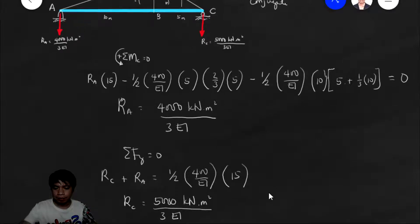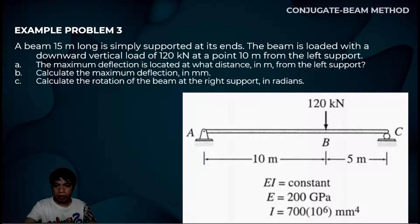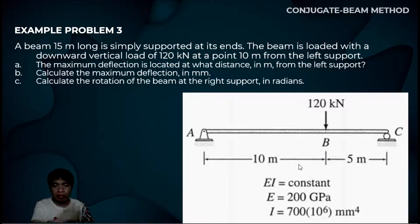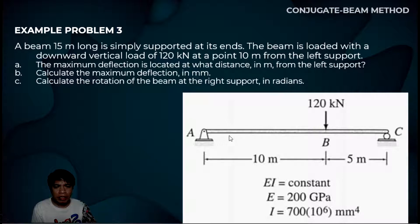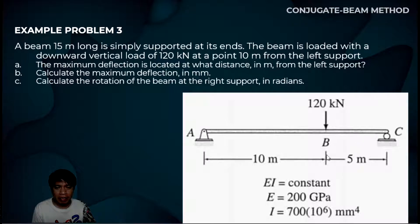So the first question in the problem is the maximum deflection — the location of the maximum deflection from the left support. Let's find where the maximum deflection is. We assume first that the maximum deflection is in the first segment. If that assumption turns out to be false, that means the maximum deflection is in the second segment.